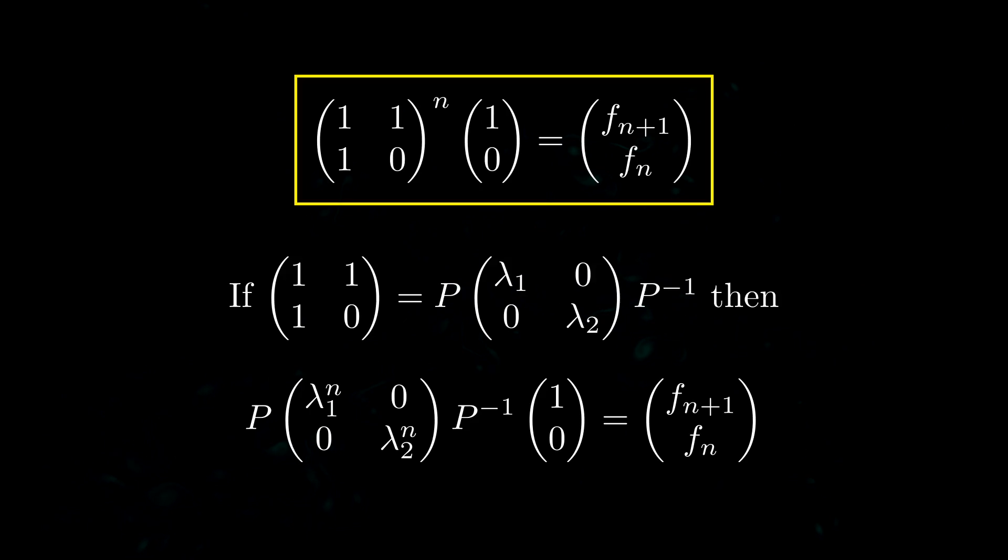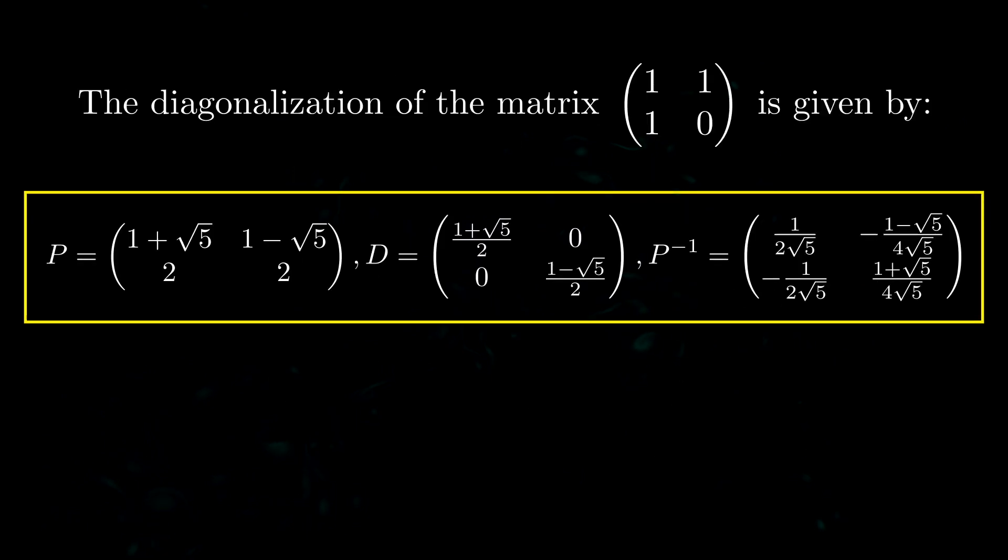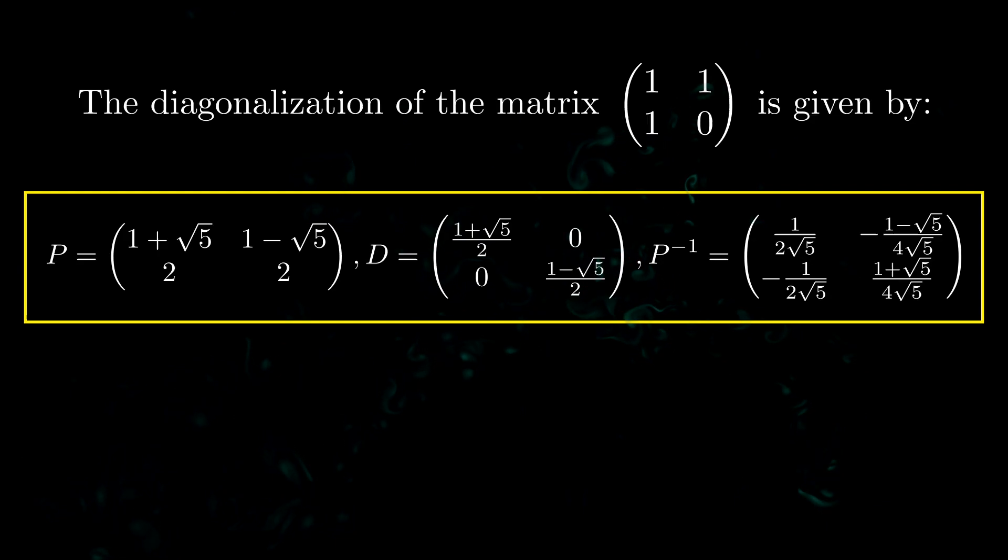So what is the corresponding diagonalization of this matrix? Well here it is and don't worry in a moment we'll see exactly how to calculate this diagonalization. What I actually want to show you quickly is just how we can get the formula for the nth Fibonacci number directly from this diagonalization.